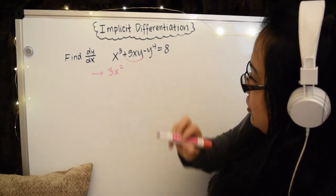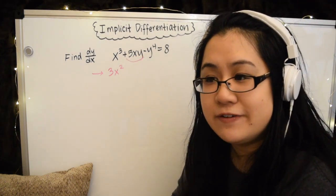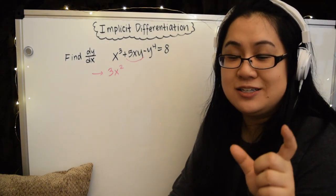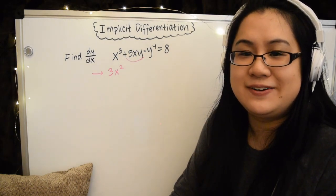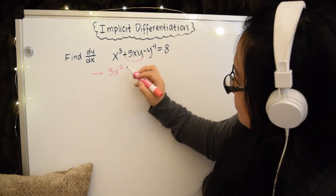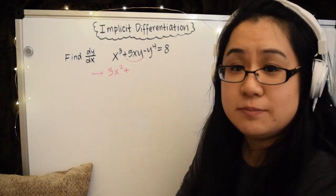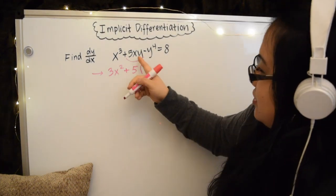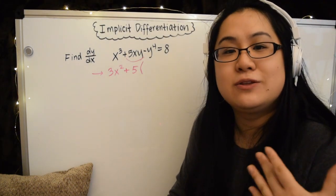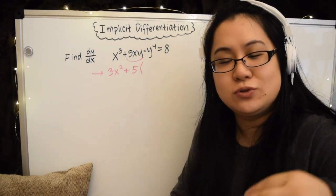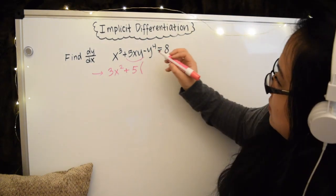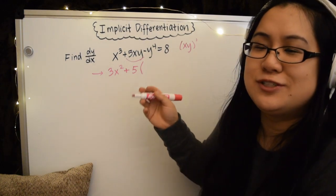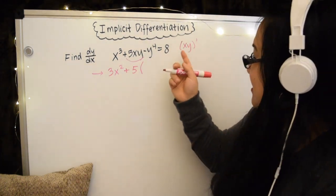There's only an x term and we're taking the derivative with respect to x. So that's it, just 3x squared. This part gets a little bit tricky. We're going to take the derivative of 5xy. But if we have a product, we have to use the product rule, right, for derivatives.